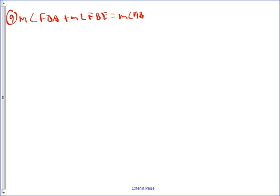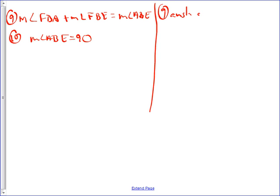Which then, by substitution, we can say measure of angle ABE equals 90 degrees. And so, this 9 here is just going to be angle addition, and 10 is just going to be substitution, property of equality.